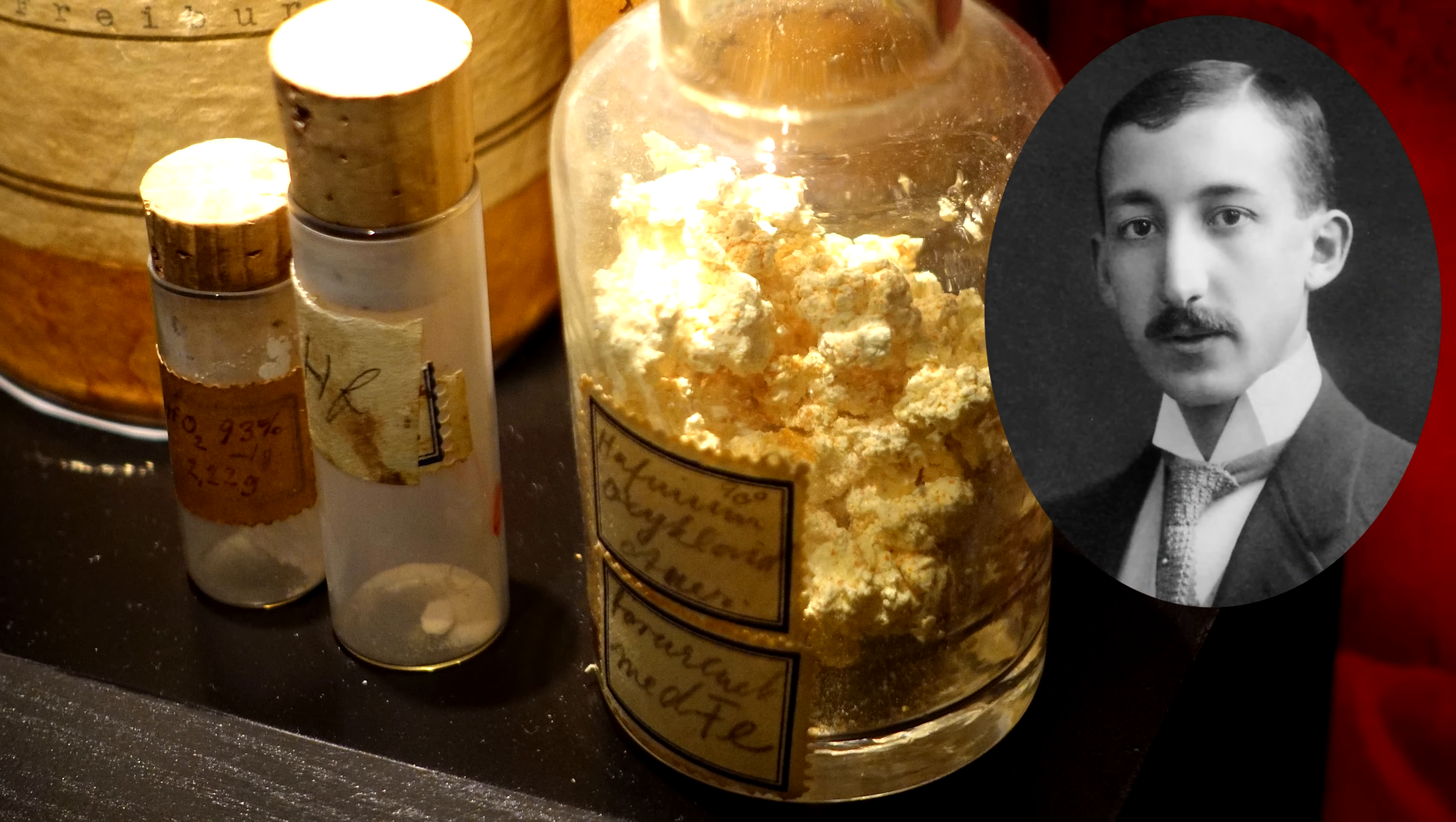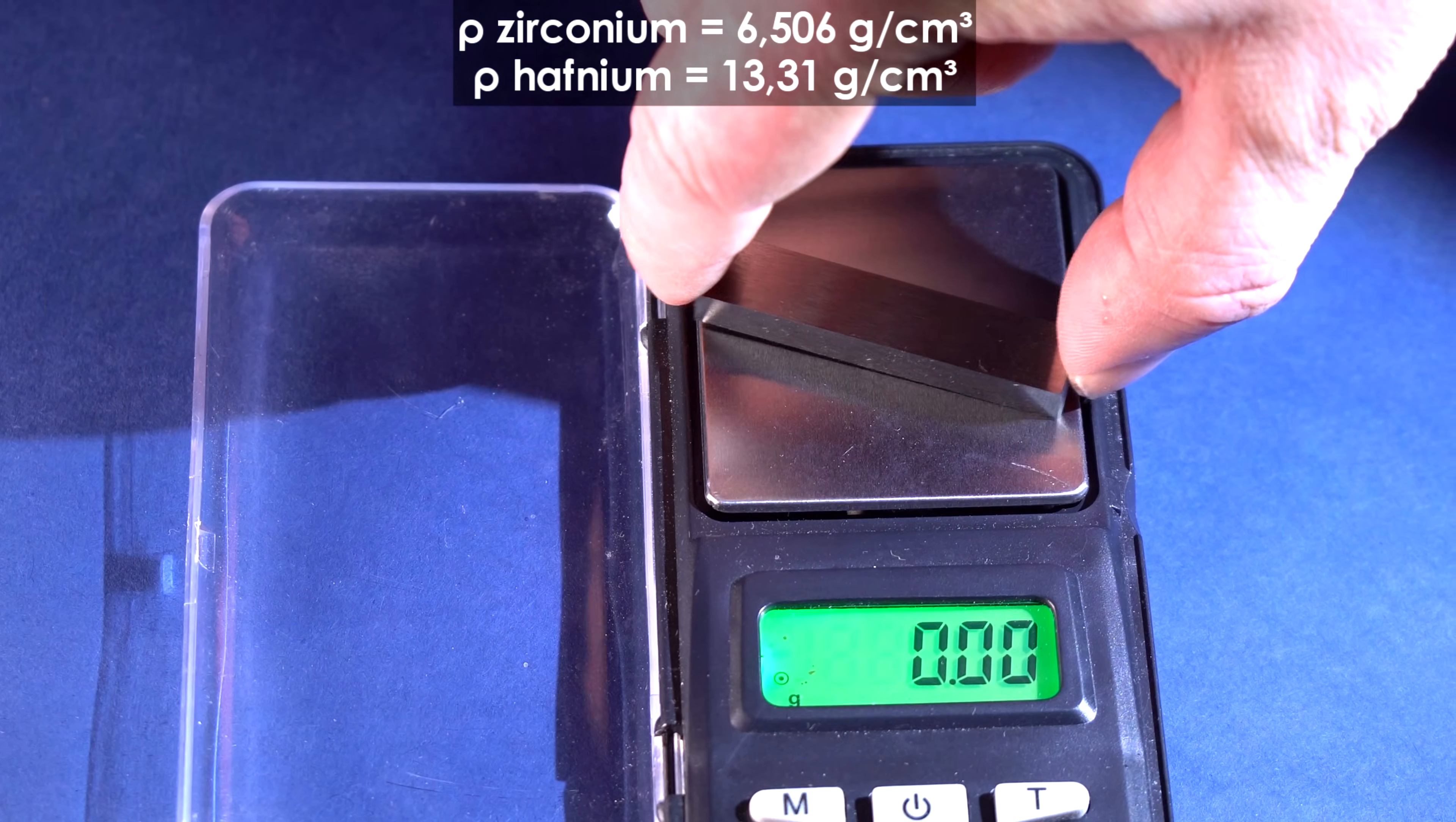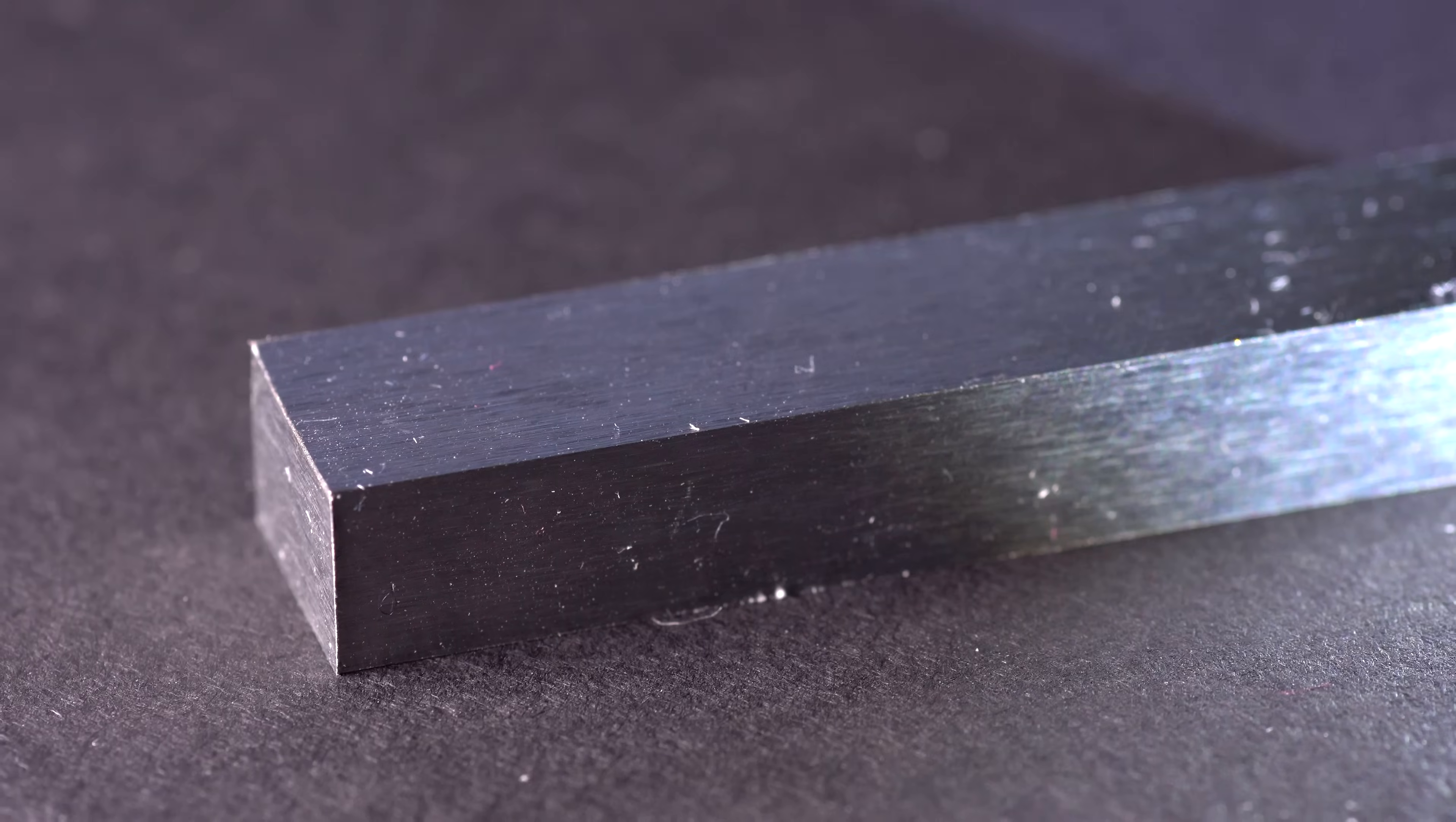Pure extracted hafnium is a silvery, malleable and quite heavy metal, the density of which is two times that of zirconium. Because of its rarity and the challenging process of separation from zirconium, the price of 1 gram of hafnium is quite high, amounting to $10 per gram.